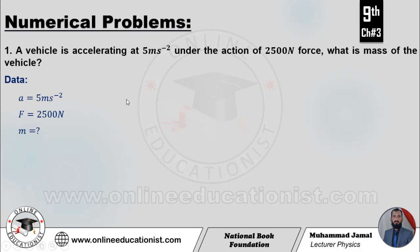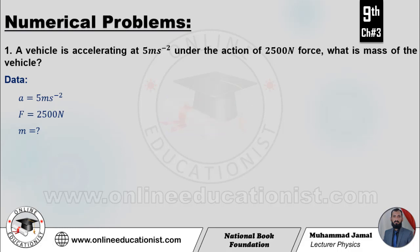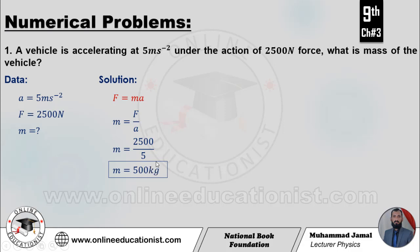Toh F equal to ma ka formula, Newton's second law of motion, hum apply karenge. Solution start karte hain: F equal to ma. Ismein se m calculate karna hai, toh m equal hoga F over a. Yaniki m equal to 2500 divided by 5. Toh yeh mass aa jaata hai 500 kg.